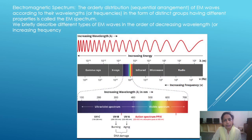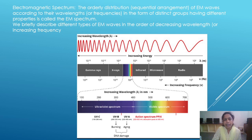The orderly distribution or sequential arrangement of electromagnetic waves according to their wavelengths or frequency, in the form of distinct groups having different properties, is called the electromagnetic spectrum. We will briefly describe different types of electromagnetic waves in the order of decreasing wavelength or increasing frequency.